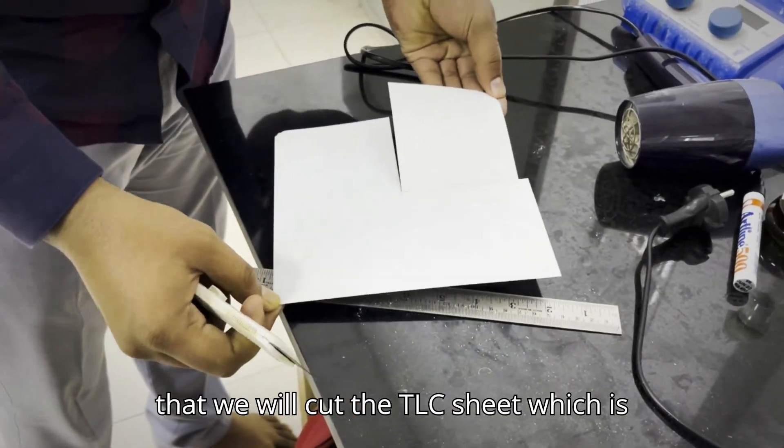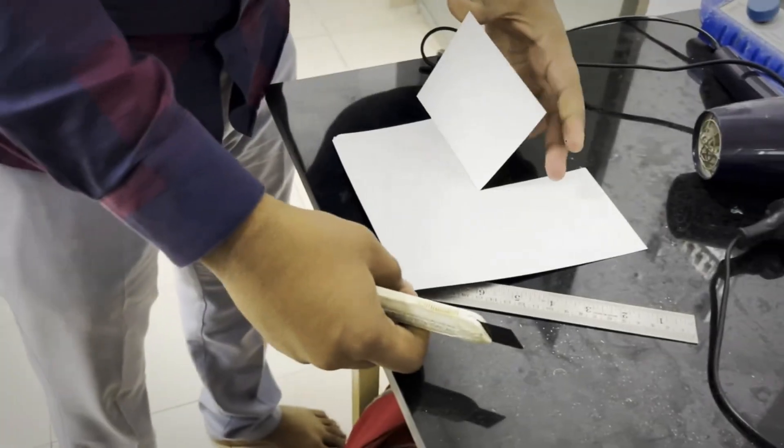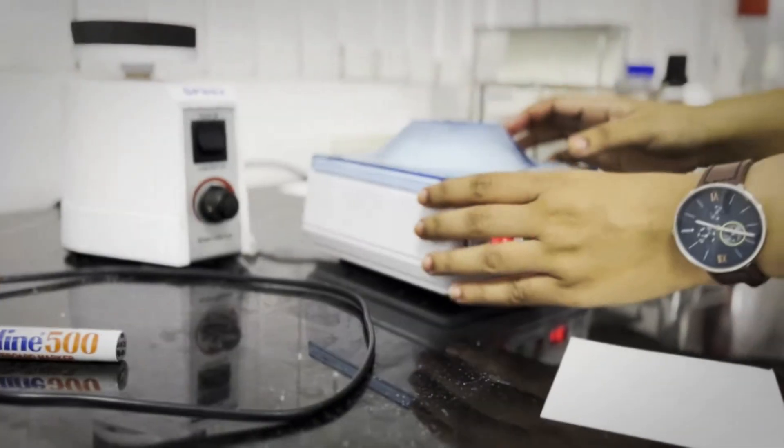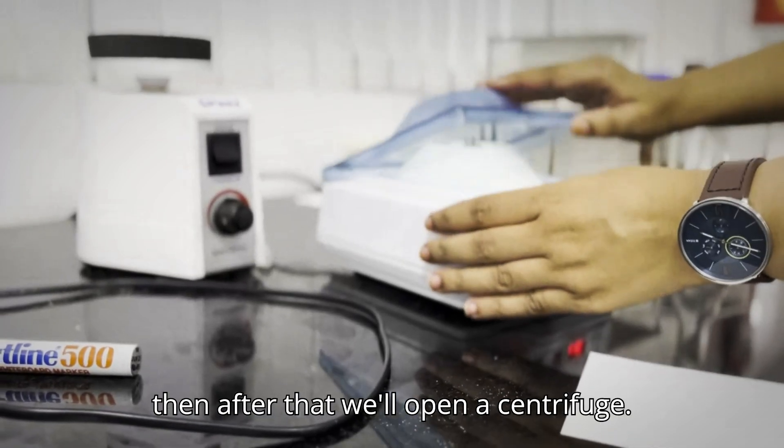After that we will cut the TLC sheet which is about 10 by 10. We will cut it in a square piece. Then after that we will open the centrifuge.